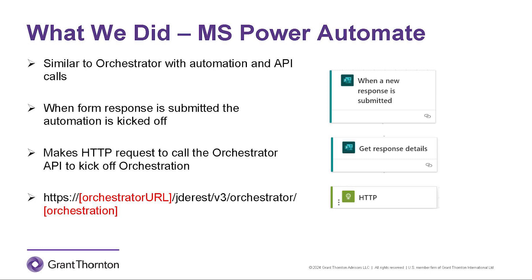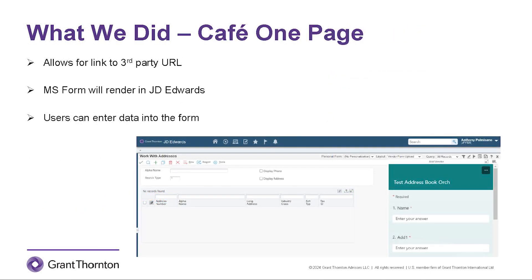You would replace the Orchestrator URL with your environment and replace the orchestration name with the name of your orchestration. As part of the JD Edwards toolset, we have Cafe One Pages. You have the option to edit a form layout to create a Cafe One Page, and these Cafe One Pages allow you to add a URL to a third-party website. Here, we can add the URL to the form we created earlier, which allows the form to be rendered in the Cafe One Page, and users can enter data into the form in JD Edwards and click Submit.